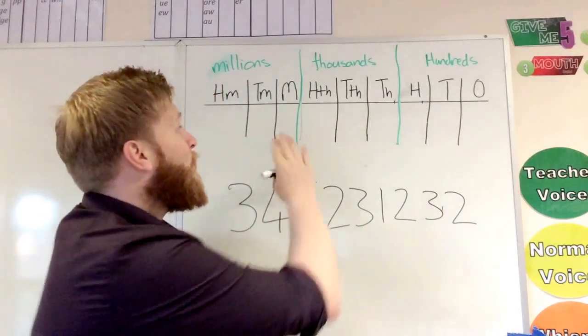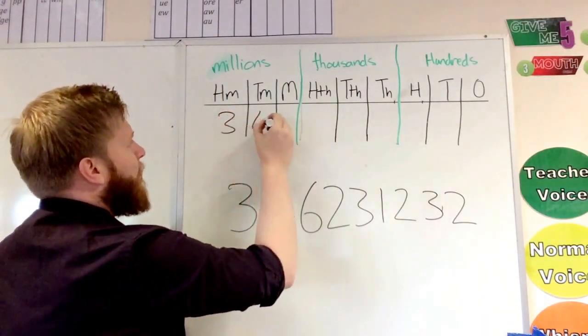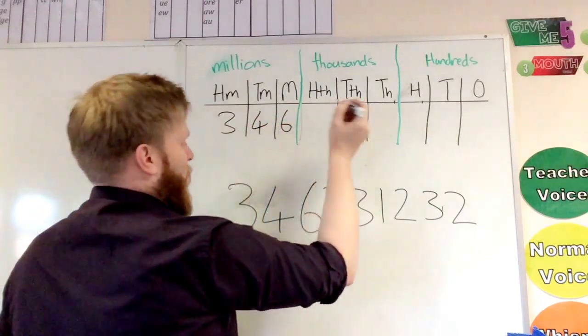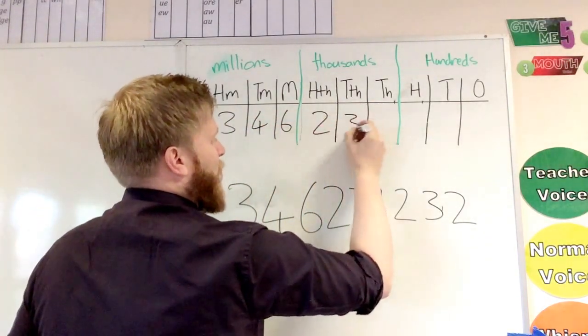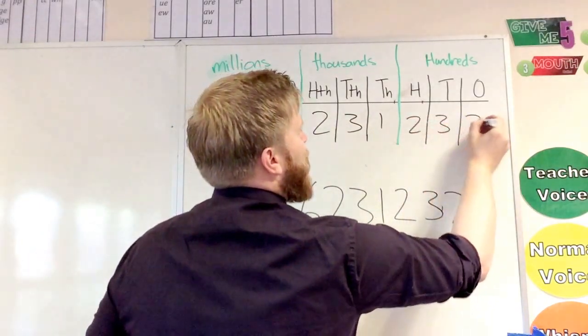So if we've got a grid, what we can do is we can put the numbers in: 3, 4, 6, 2, 3, 1, 2, 3, 2.